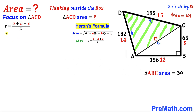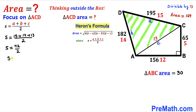Let's calculate the value of S. S equals (15 + 14 + 13) divided by 2, which simplifies to 42 divided by 2, giving us S equals 21 units.